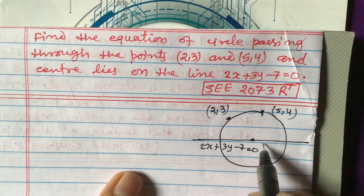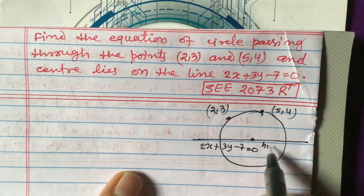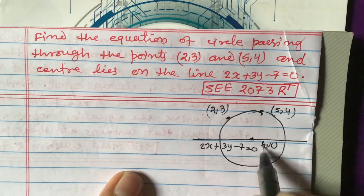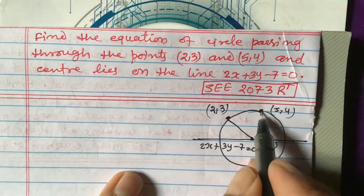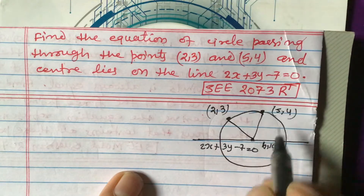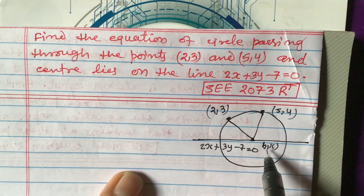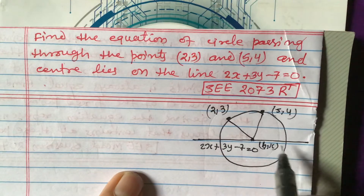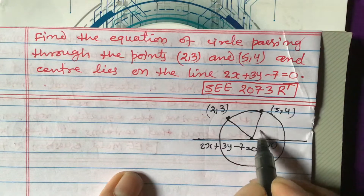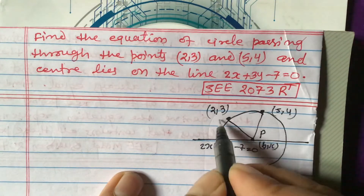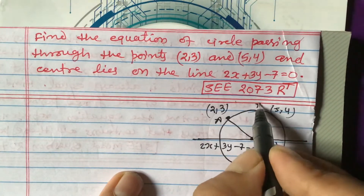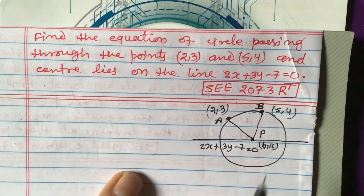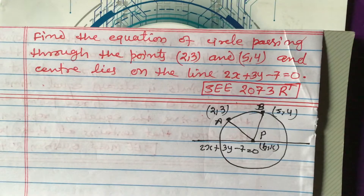Let us say the center is P(h, k). If you join the center to the two points on the circle, you can see — this point is P (the center), this is A, and this is B.